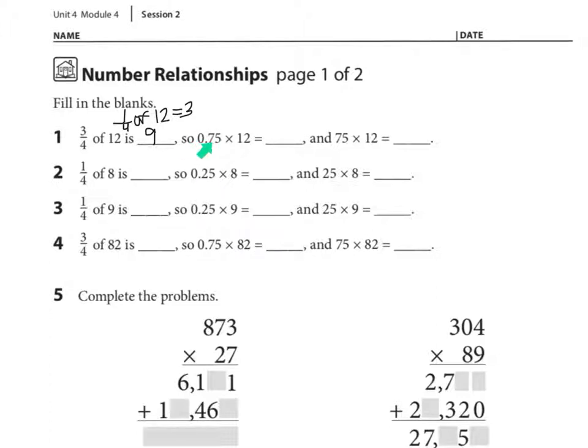So if 3 fourths of 12 is 9, then 75 hundredths times 12. Now is 75 hundredths and 3 fourths equivalent? Yes they are. So 75 hundredths times 12 also equals 9.